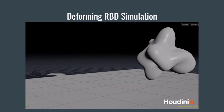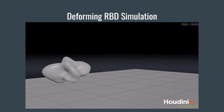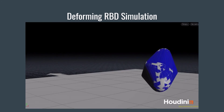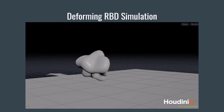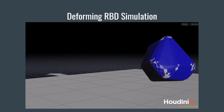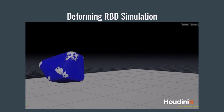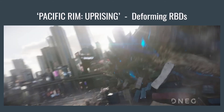If you set an object as a deforming RBD in the RBD packed object, it will update the collision shape on every frame. I found this technique much more effective for this shot because I could apply interesting realistic dents and then the collisions will update accordingly. I also designed the noise deformations so that it would be more extreme closer to the kaiju and more subtle further away.